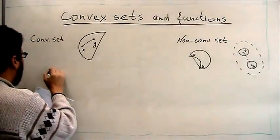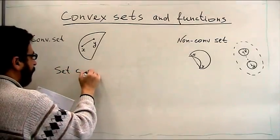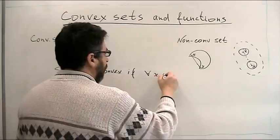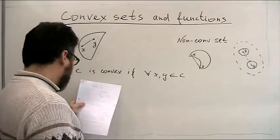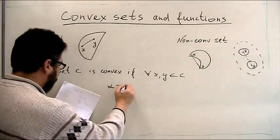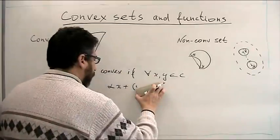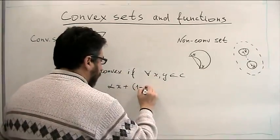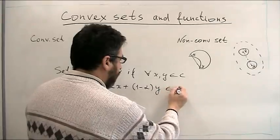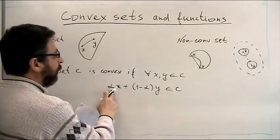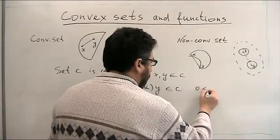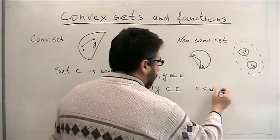Set C is convex if for any x and y belonging to C, the interval — expressed as alpha·x plus (1 minus alpha)·y — should also belong to C. But not for any alpha; in order to be in between those two points, alpha should satisfy 0 ≤ alpha ≤ 1.